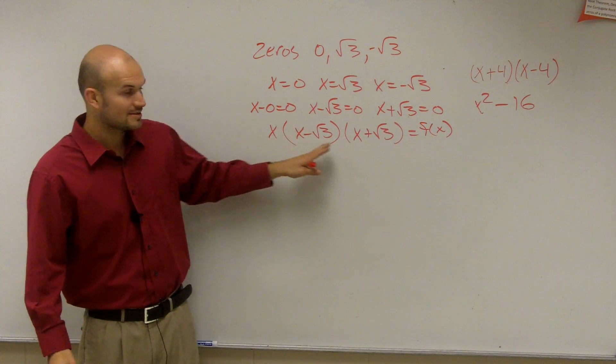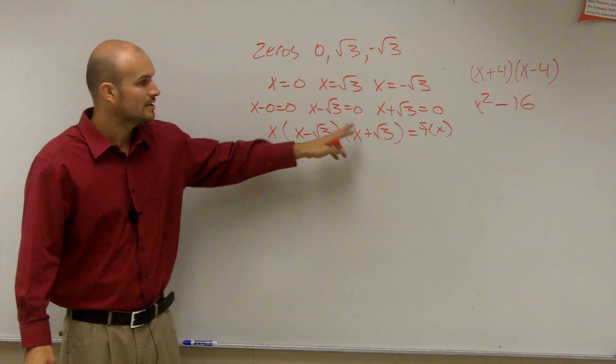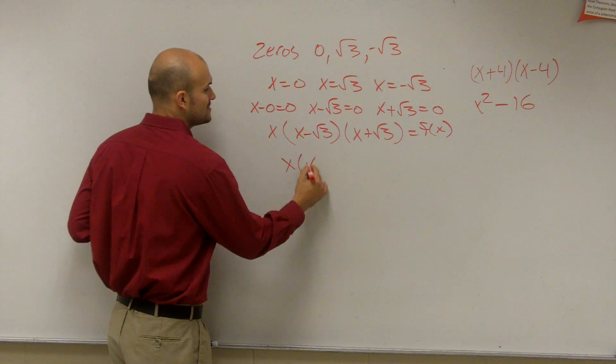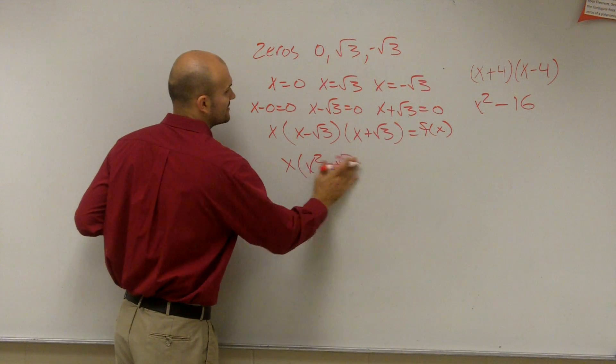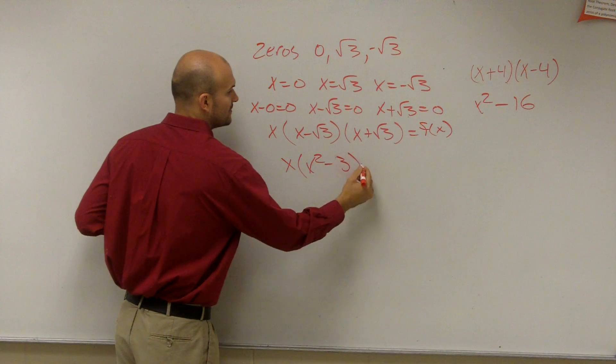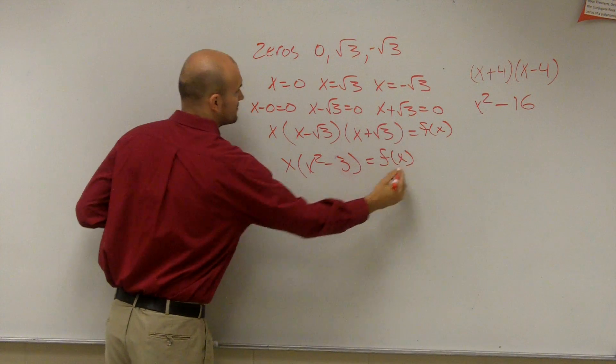So then you have this, and you're going to multiply these out. So this is a difference of two squares. x times x squared minus 3 equals f of x.